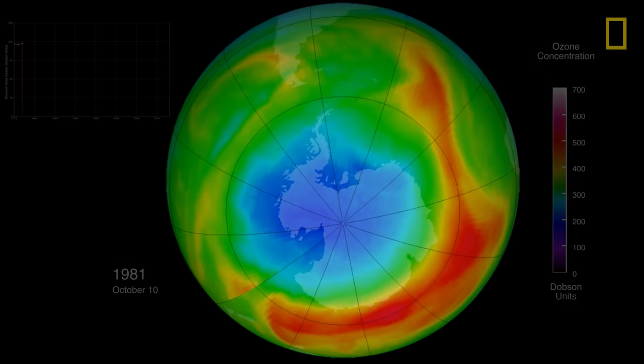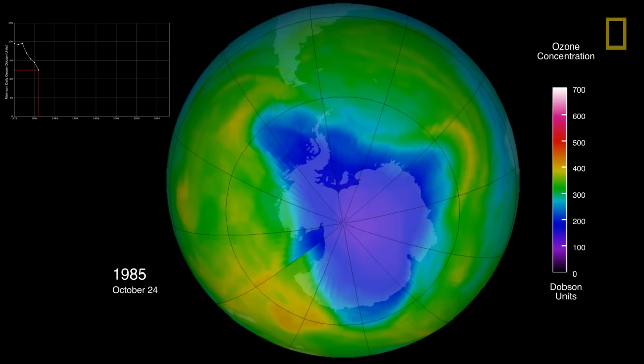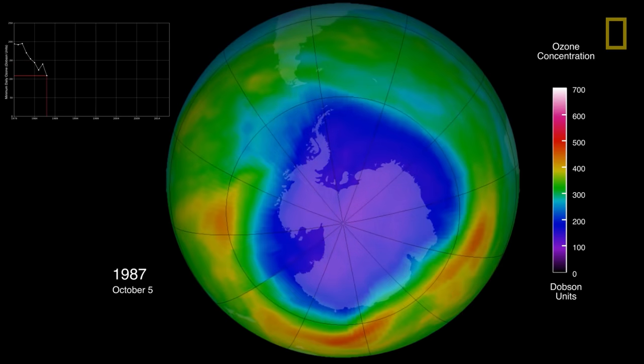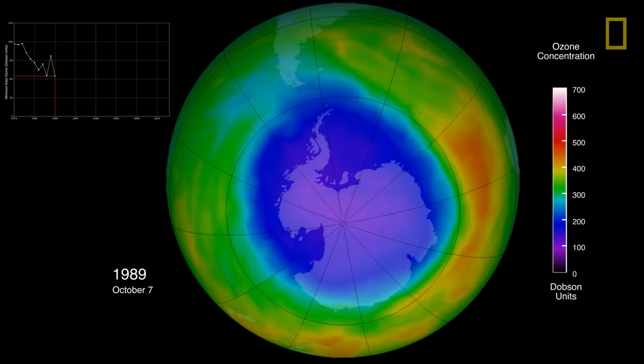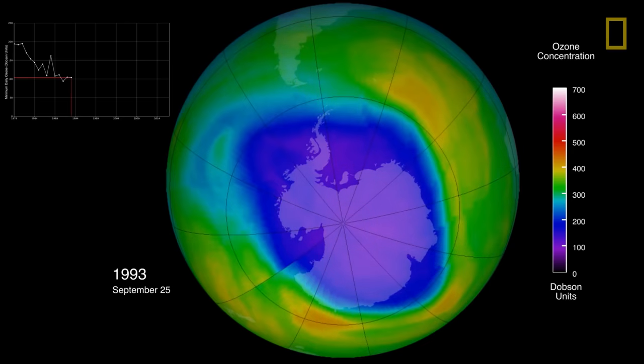The ozone layer above the Antarctic, in particular, has been impacted by pollution since the mid-1980s. There, the region's low temperatures speed up the conversion of CFCs to ozone-damaging chlorine.